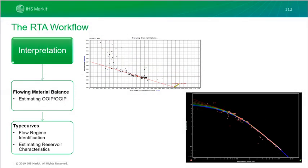Looking back at the story we were building, once we've done our diagnostics and determined that we trust the data, we go into the next step: interpretation. Things we want to find out through interpretation include flow regime identification and estimating reservoir characteristics. The interpretation will help us have a sense of our drainage area or initial contacted area and our initial fluids in place — gas, oil or water — and we can evaluate these through the use of the flowing material balance. We can identify if our well is in transient flow or boundary dominated flow, and we can also start estimating reservoir characteristics such as permeability, skin and fracture half length.